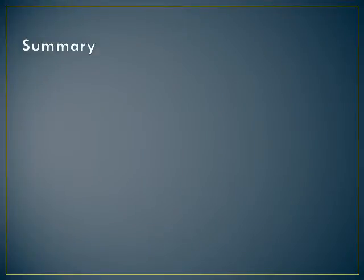Quick summary of this lecture. Every circuit has to have three things. It has to have a source of energy, a battery, it has to have a place to use that energy, a resistor, and it has to have something conductive that connects them and makes a complete circuit. We have standard symbols to draw all of these things that you guys will be expected to know.